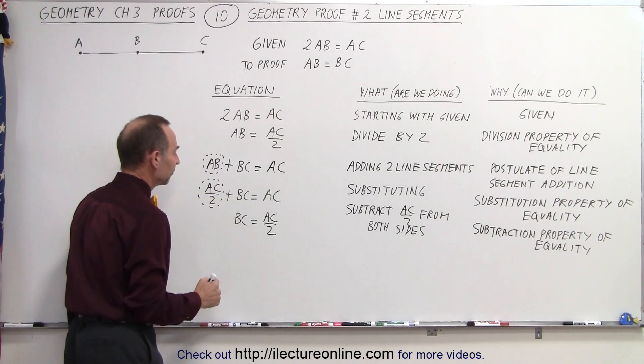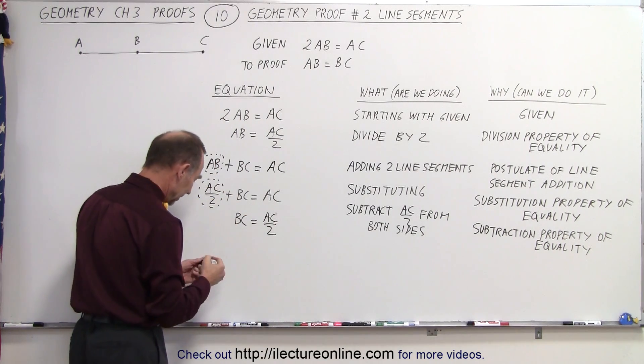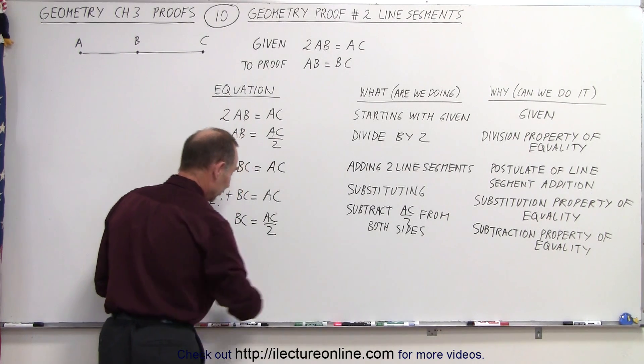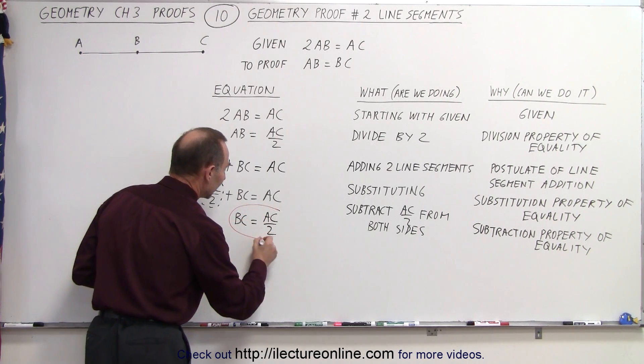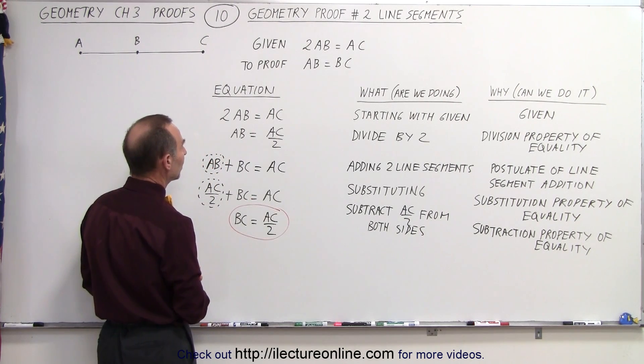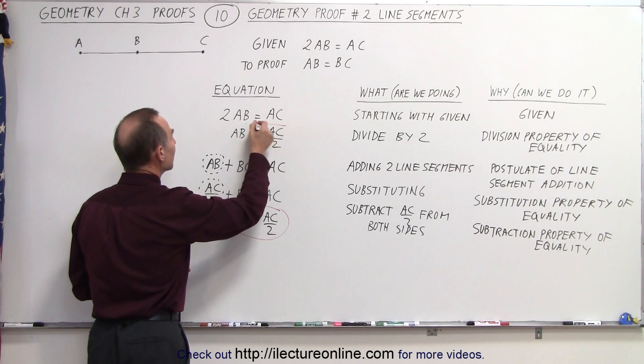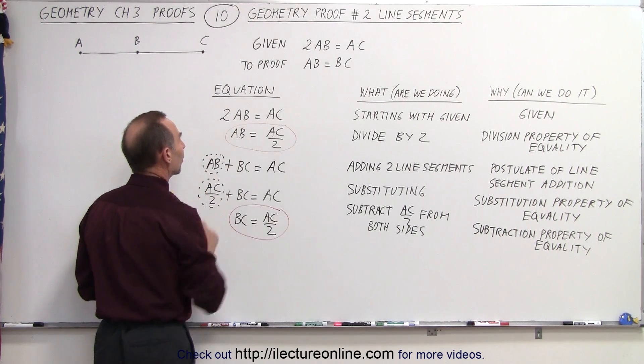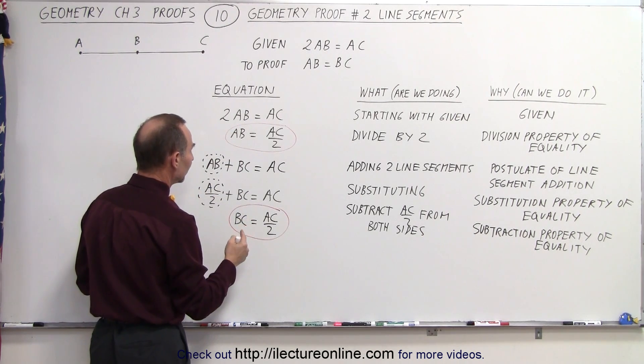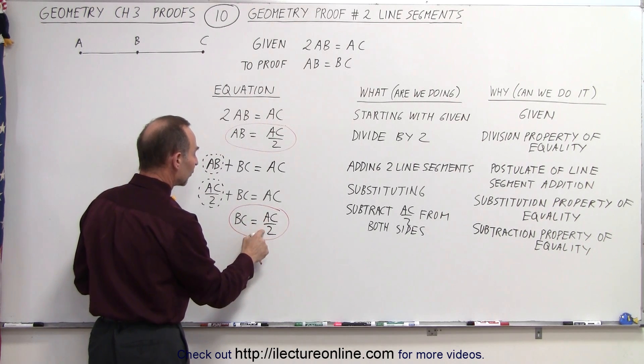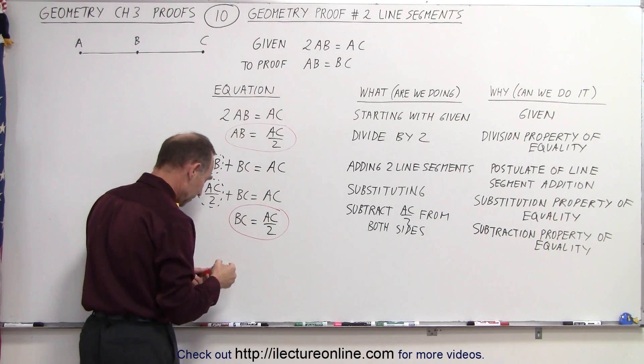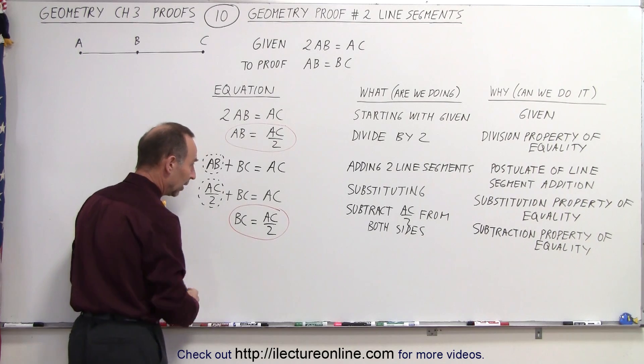Now let's see what we have. Here we have that BC, and let me use a different color. It makes it easier to see. Here I have that BC is equal to AC over 2, and there I have AB is equal to AC over 2. So what I can do is I can replace AC over 2 by AB. Again, I'm making a substitution.